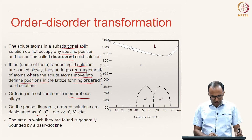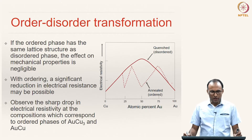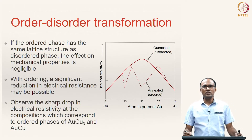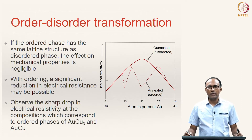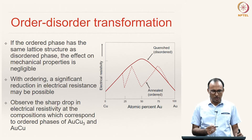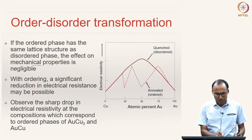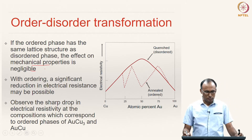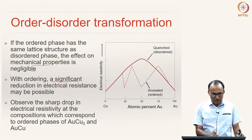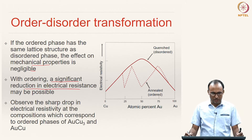The area in which ordered solutions are found on a phase diagram is generally bounded by a dash-dot line. If the ordered phase has the same lattice structure as the disordered phase, the effect on mechanical properties is negligible. However, with ordering, a significant reduction in electrical resistance may be possible — so electrical properties can change significantly.